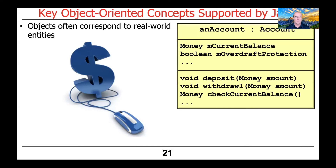When you do object-oriented design, you typically try to have the objects correspond to some sort of real-world entity, whatever domain you happen to be operating in. For example, if you were developing something for the financial services domain — banking — you might define an account class or object. That object might have certain fields like the current balance and perhaps a Boolean to indicate whether overdraft protection is enabled. And then it might define methods that provide behaviors available to users, like the ability to deposit money, withdraw money, or check the current balance.